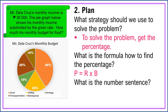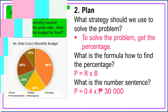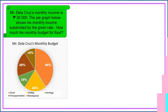What is the number sentence? The number sentence is: P is equal to four-tenths times thirty thousand pesos. Don't forget to change the rate to decimal. We already have a plan.